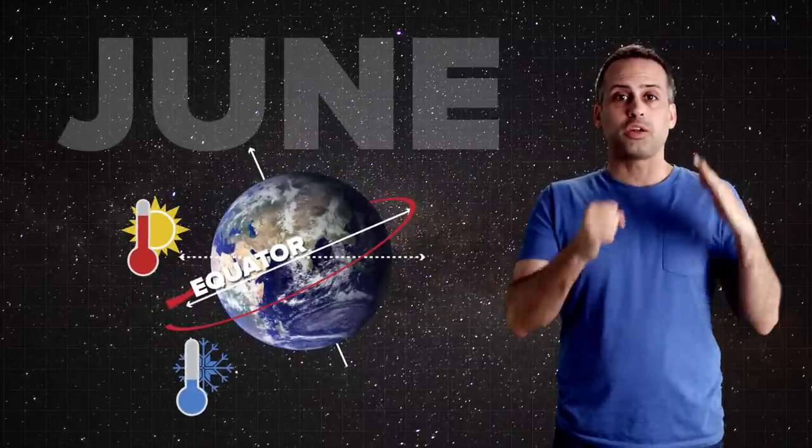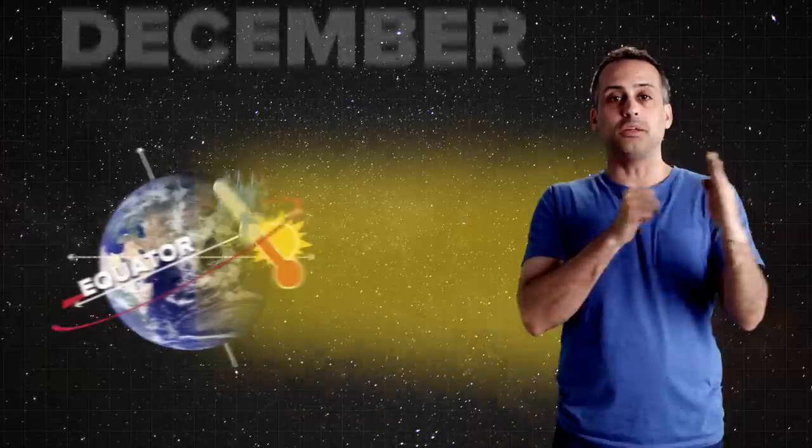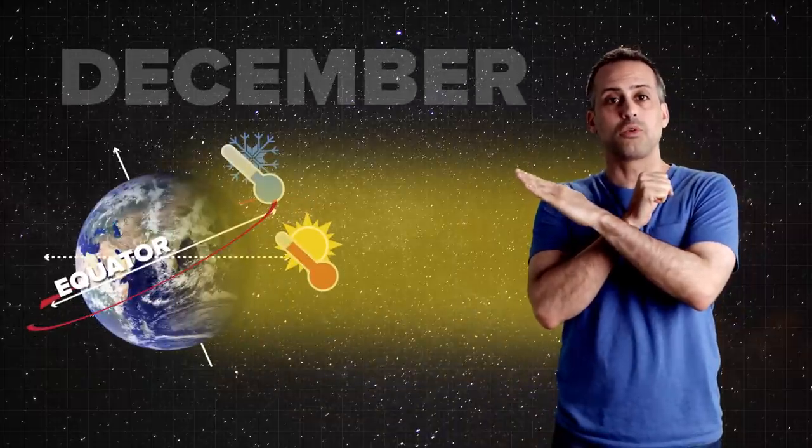In June, the Northern Hemisphere gets more direct sunlight, so it's northern summer and southern winter. In December, the reverse is true - winter in the north, summer in the south.